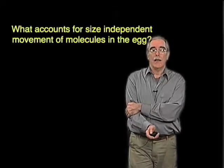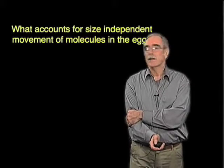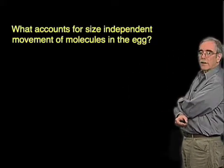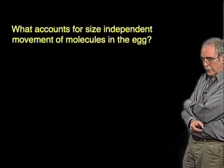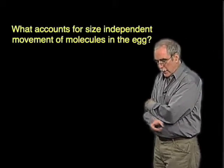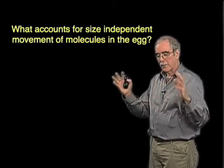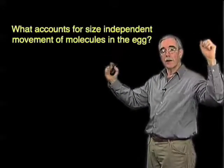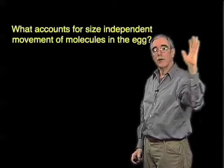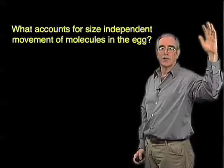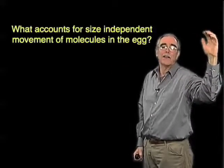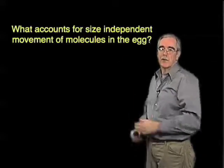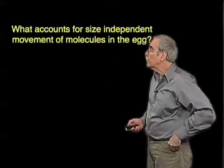If you actually look at eggs during the process when this gradient is being established, the way we've talked about it before, we've had a localized RNA which is translated into a protein, and you have diffusion of this molecule through what you would think of as a stable cytoplasm, such that diffusion could establish a stable gradient.